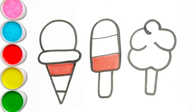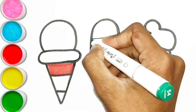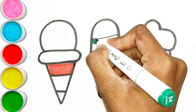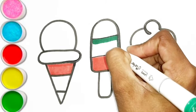G is for goat. G, g, goat. H is for hand. H, h, hand. I is for igloo. I, i, igloo.